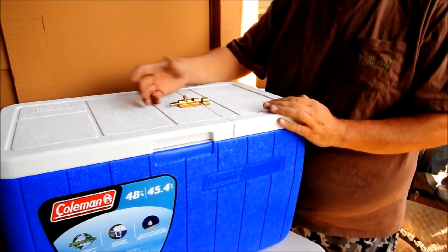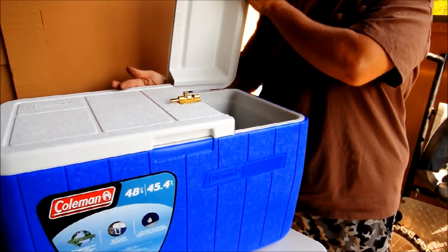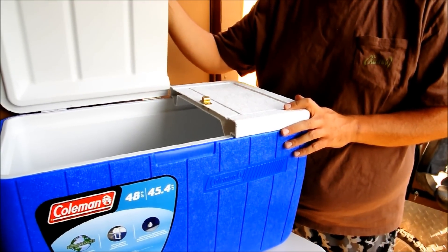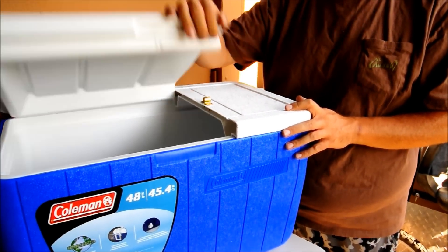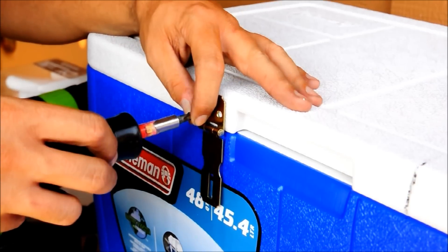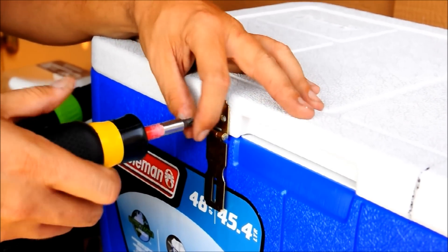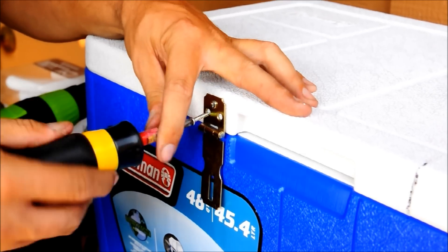Now with our barrel bolt attached, we can open one side to put our fish in or the other side at the end of the day when it's time to weigh them in. Now we're going to throw in a little extra security with our latch on the lid just to keep it closed.